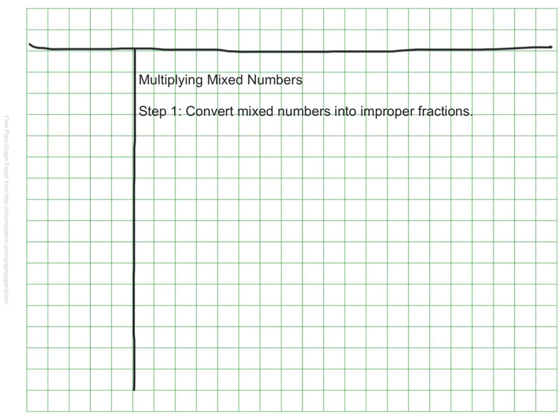Once we've converted our mixed numbers into improper fractions, we can then follow the same steps. So we can multiply the numerators, and then multiply the denominators. And of course, our last step would be to simplify if it was needed.